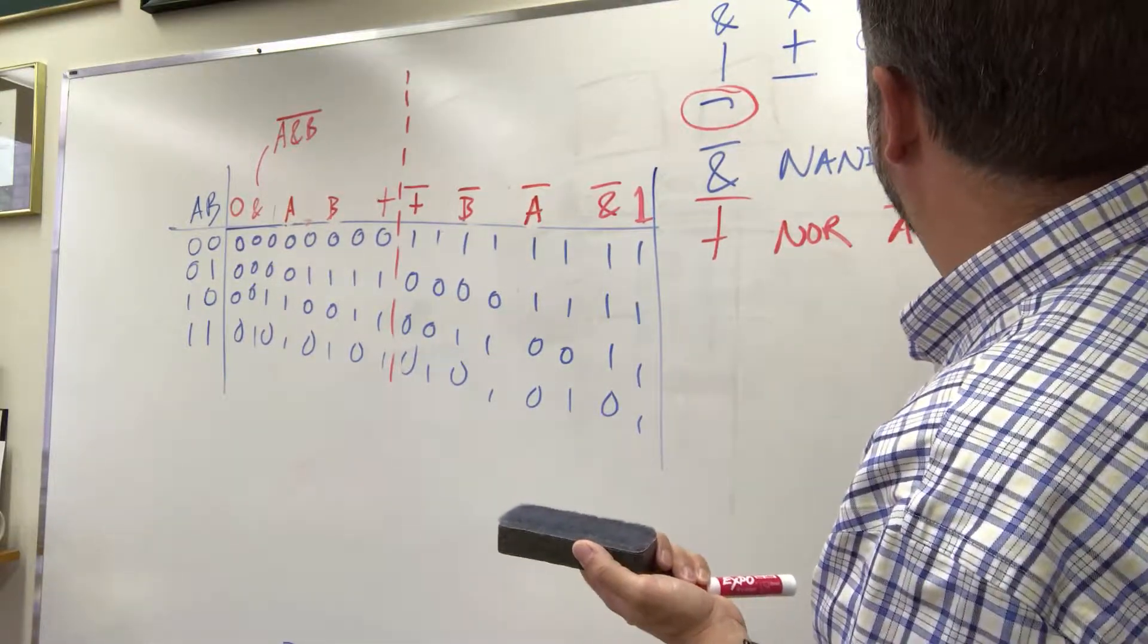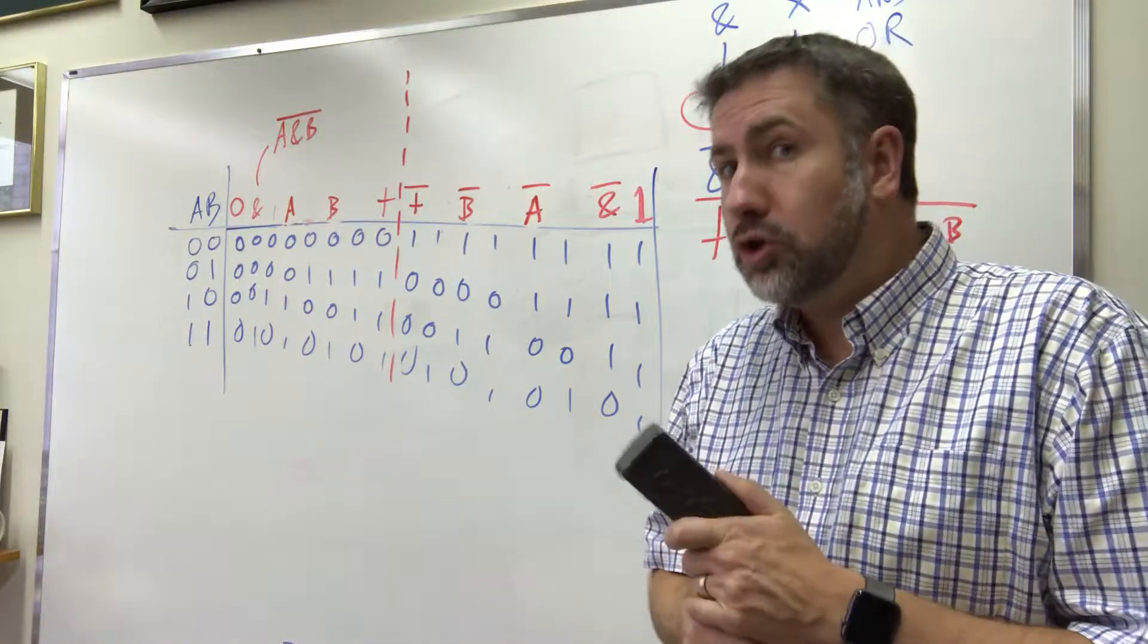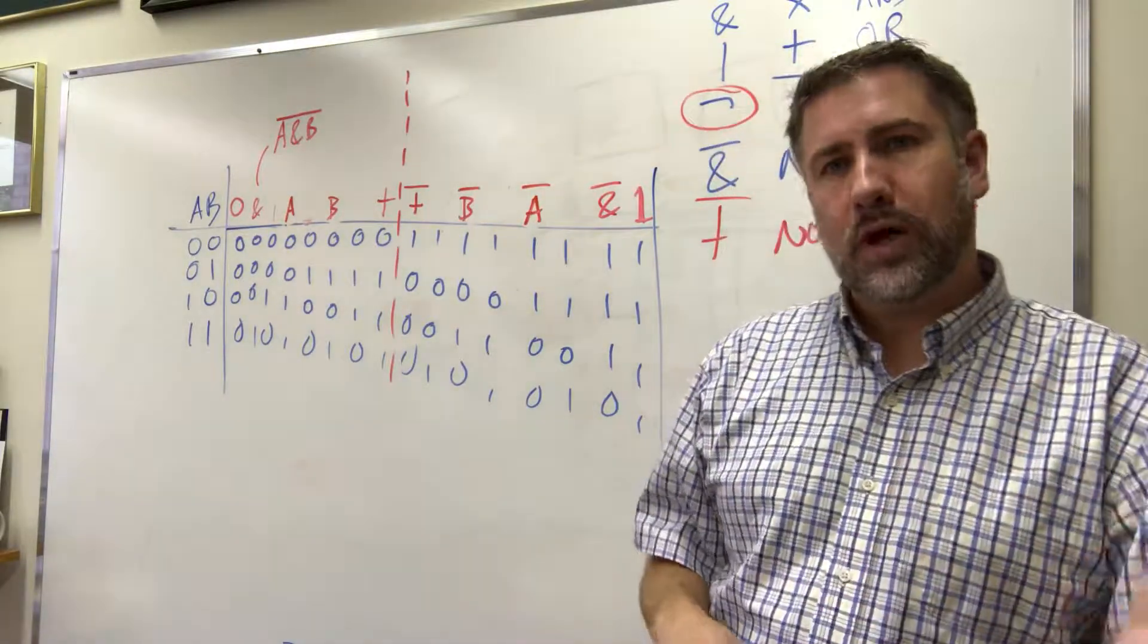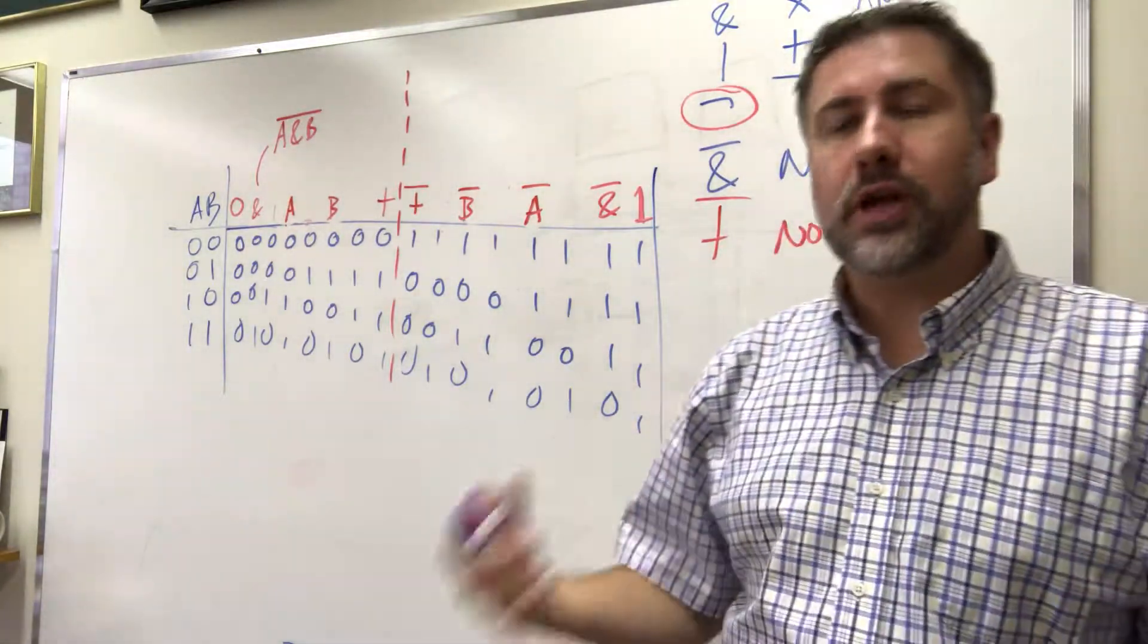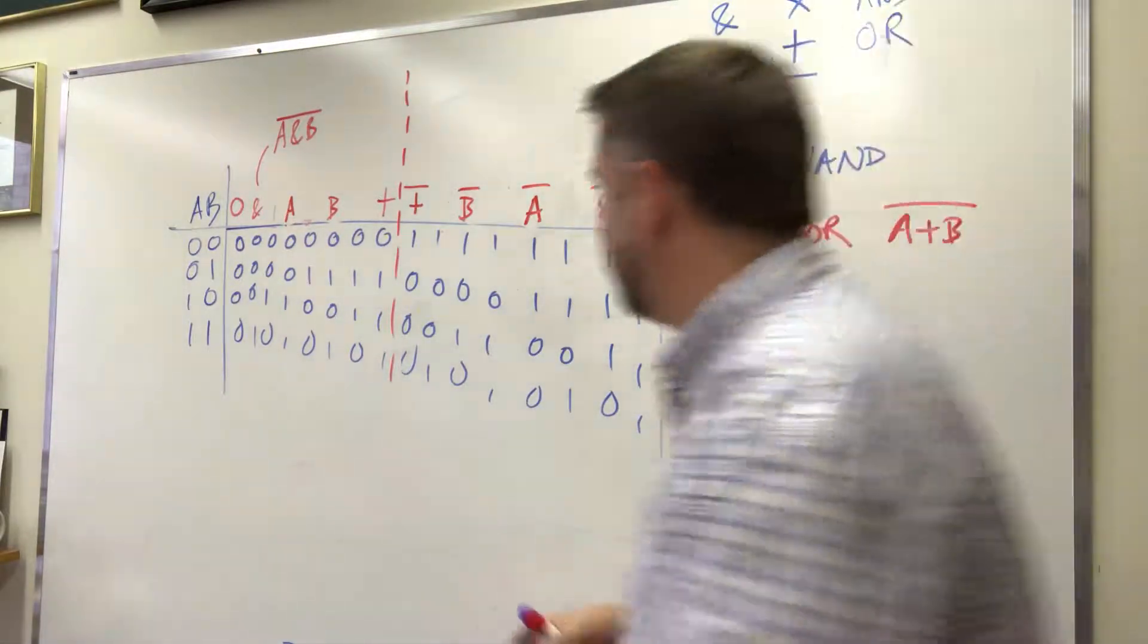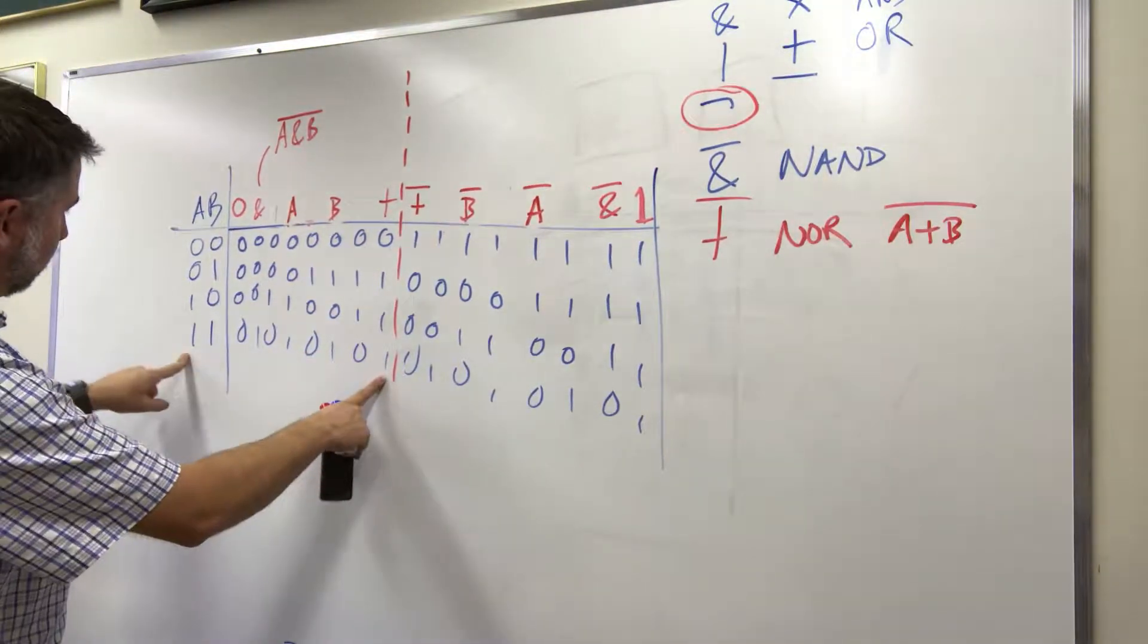Now if I say you could have strawberry ice cream or vanilla ice cream, usually people interpret that as one or the other but not both. In logic, OR means one or the other or both. OR is true - the output is one if one or the other or both of the inputs is one.